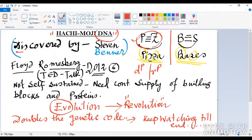Along with ATGC, you have P, Z, B, and S. So along with adenine, guanine, thymine, and cytosine, we have four more letters that we can remember as PZBS bases. P and Z entangle themselves by three hydrogen bonds, and B and S are extra bases found in the newly synthesized DNA.